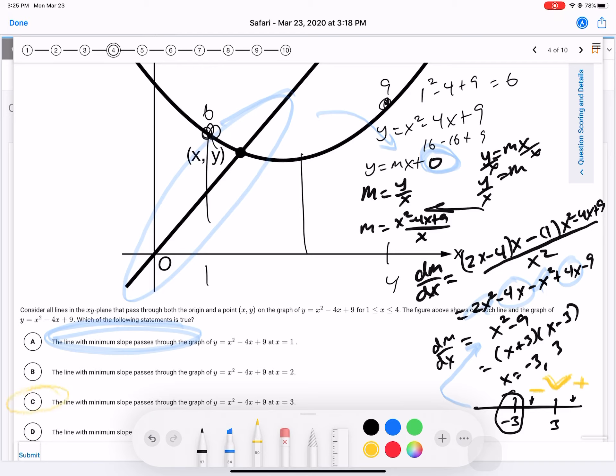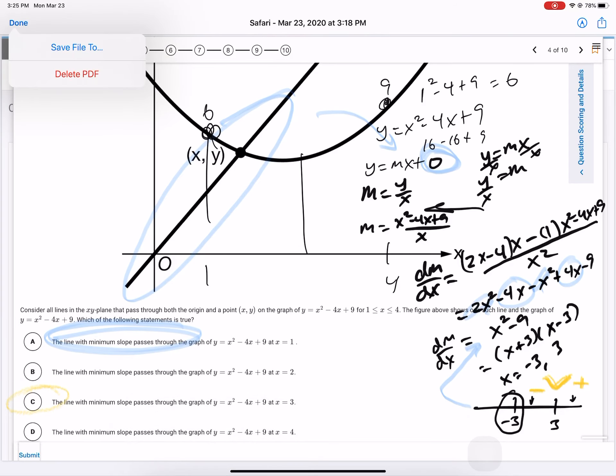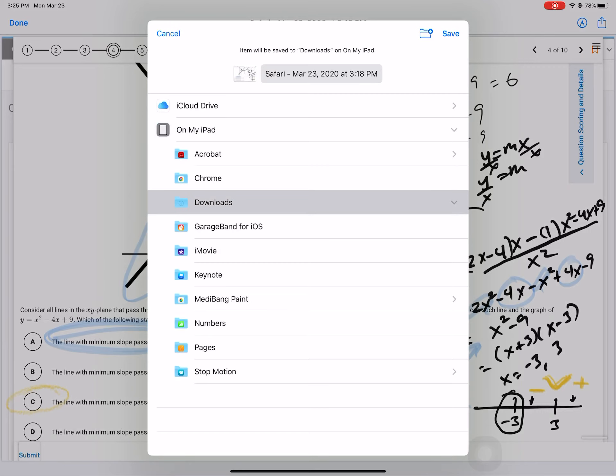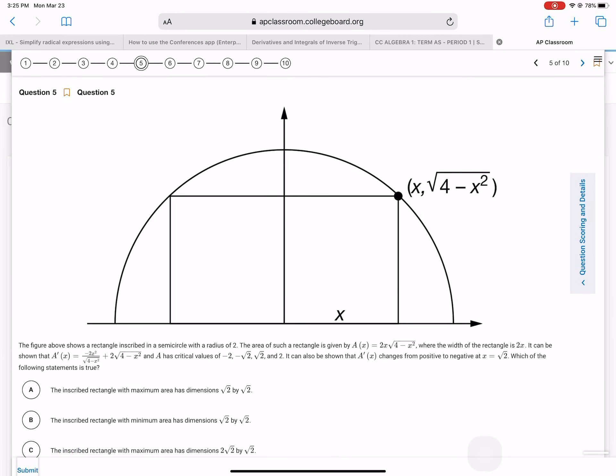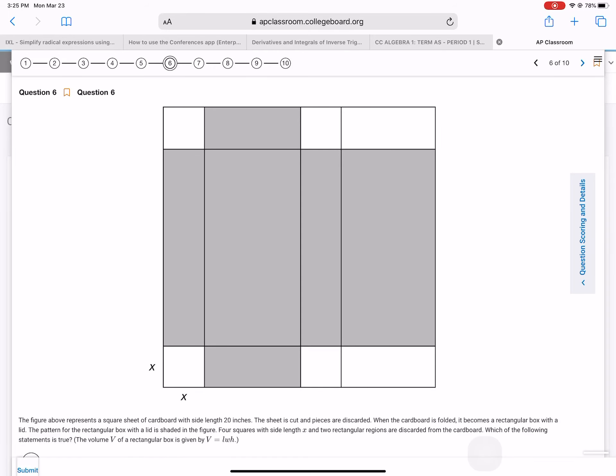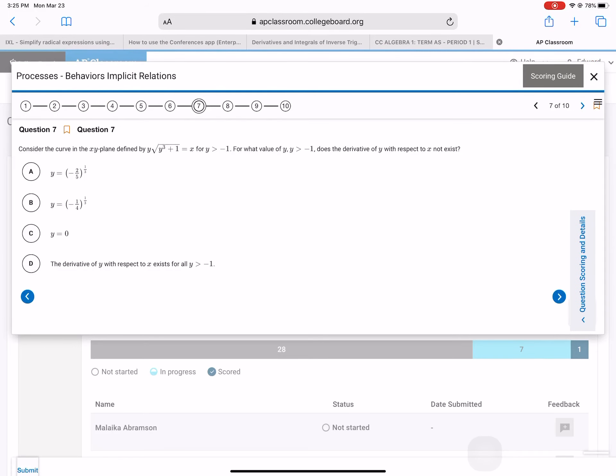So we have a minimum slope when x is equal to 3. That's what we're looking for. Okay. Save that, I might need it later. Next problem. This, we did this one already, very similar to that. Let's do this one.